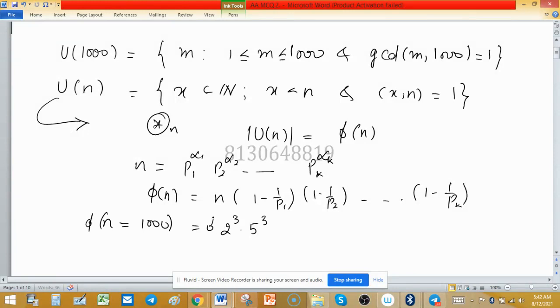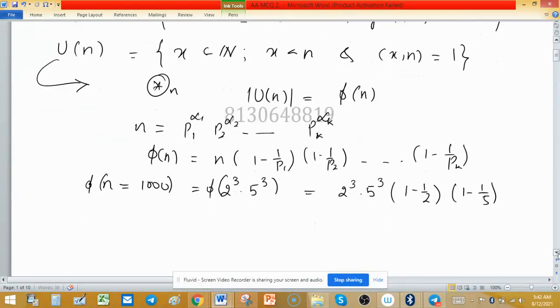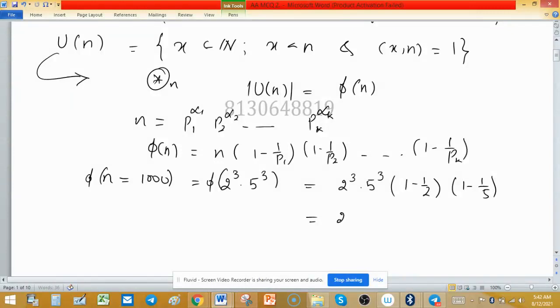φ(1000) equals 2³ · 5³ · (1 - 1/2) · (1 - 1/5). Using our formula, this is 2³ · 5³ · (1/2) · (4/5).